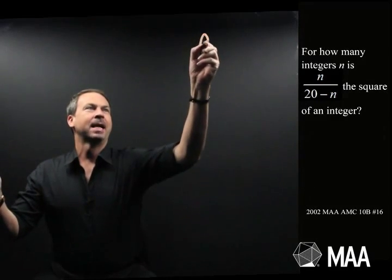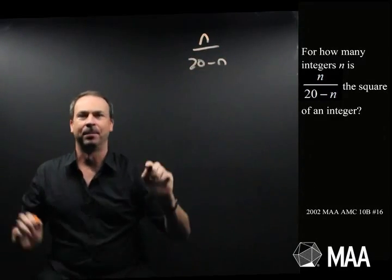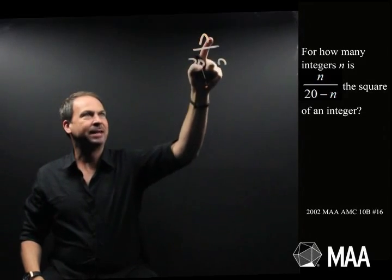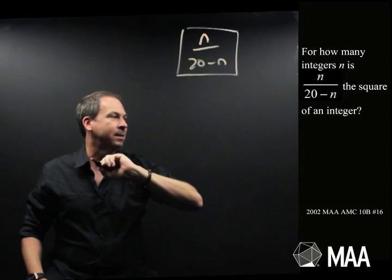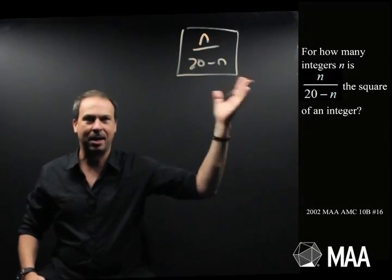Alright, hang on, so n over 20 minus n. I want to know for how many integers n, so how many values of n, does this thing turn out to be a square of an integer? Like a square number, 1, 4, 9, 16 or something.